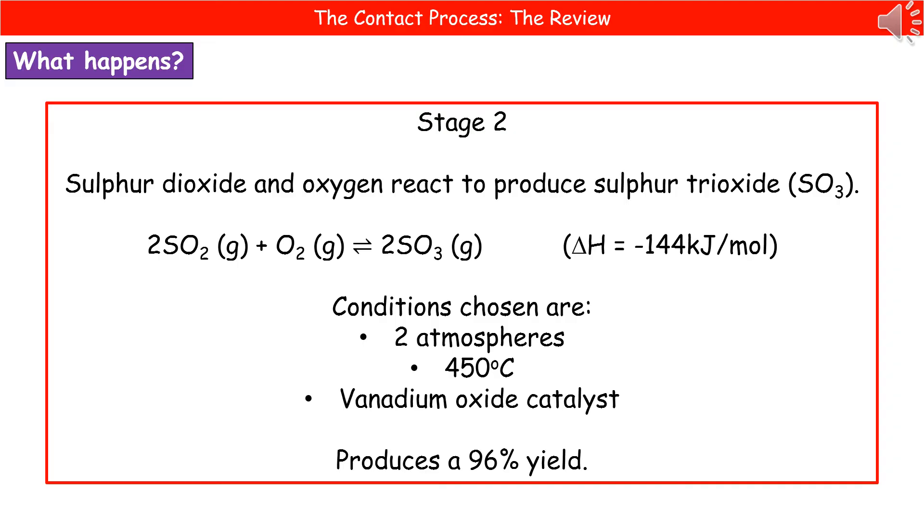In order to actually maximize this process, we need certain conditions. We use a pressure of two atmospheres, a temperature of 450 degrees Celsius, and a catalyst of vanadium oxide. By doing that, we actually end up with a 96% yield at this point.